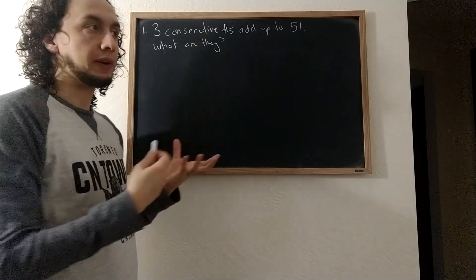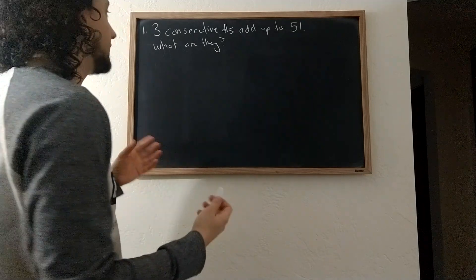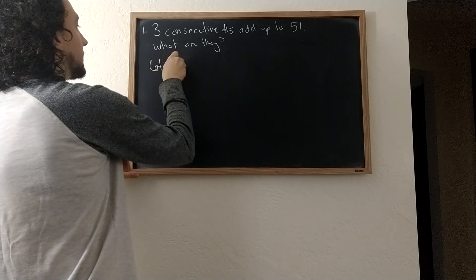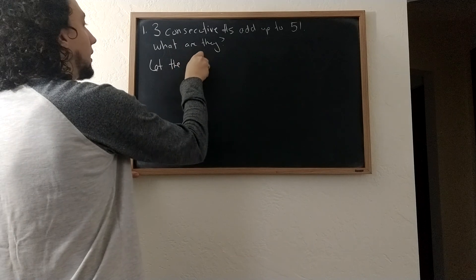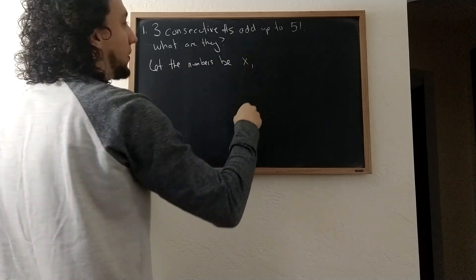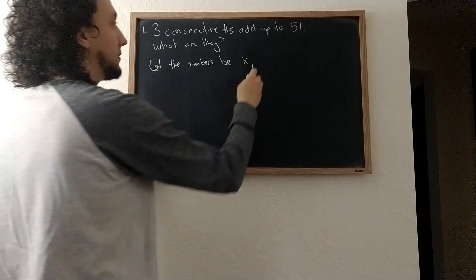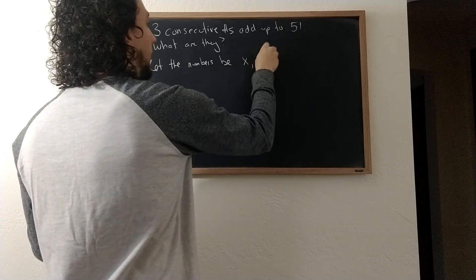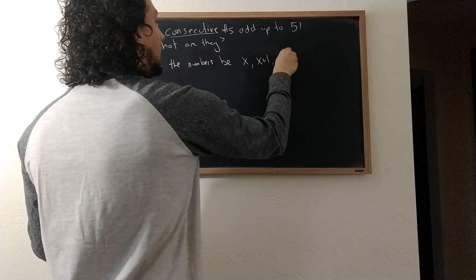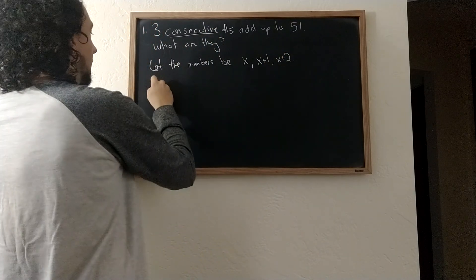And again here we can use variables and put them in an equation to find the answer. So we can say let's let the numbers be x, and then instead of using a brand new variable name, I know the next number should be x plus one because they're consecutive, and x plus two.